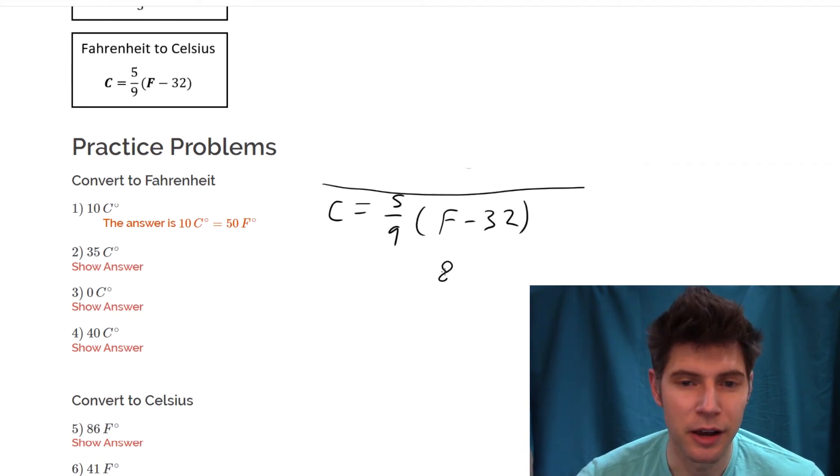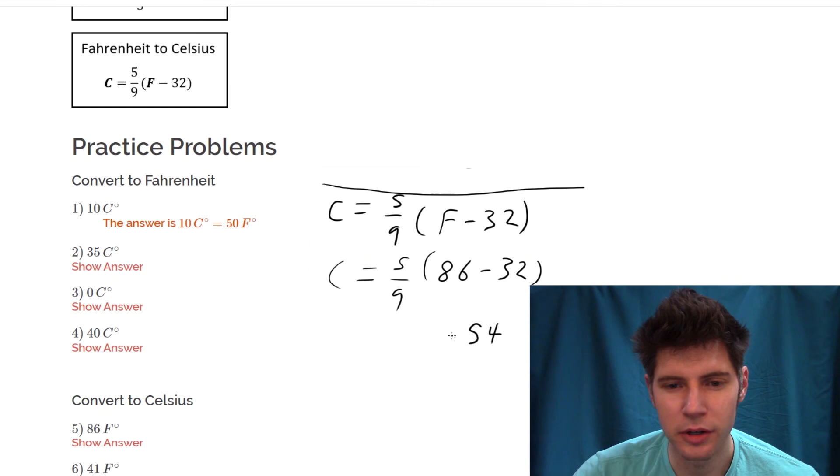So we'll plug in 86 for F. 86 minus 32 is 54. So now we have 54 times five-ninths.